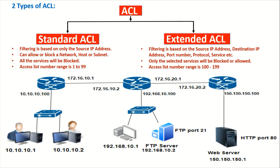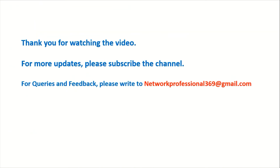When writing an ACL, you can use two methods: numbered ACL or named ACL. In numbered ACL, instead of giving a name, you assign a number. If you assign any number from 1 to 99, the router understands it as a standard ACL and checks only the source IP address. If you assign a number from 100 to 199, the router understands it as an extended ACL and can work with source IP, destination IP, port number, protocol, and service.